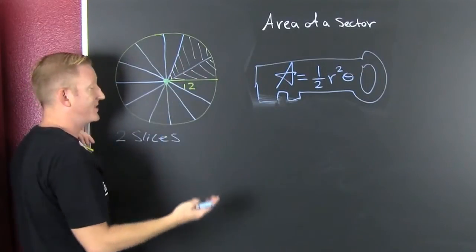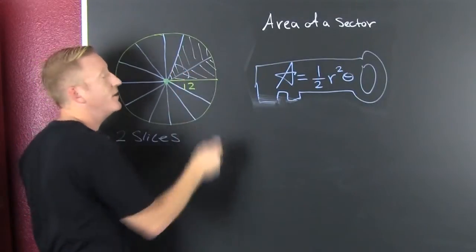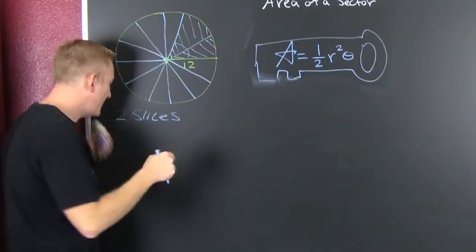You ate two slices. The problem is, how do you find out the angle in radians? Oh boy. We're going to set up a proportion. And here we go.